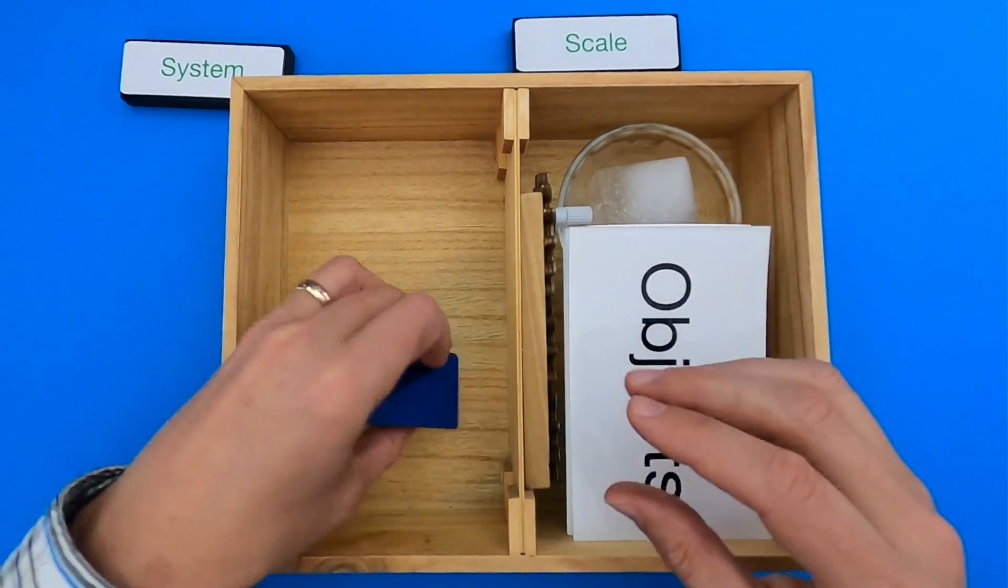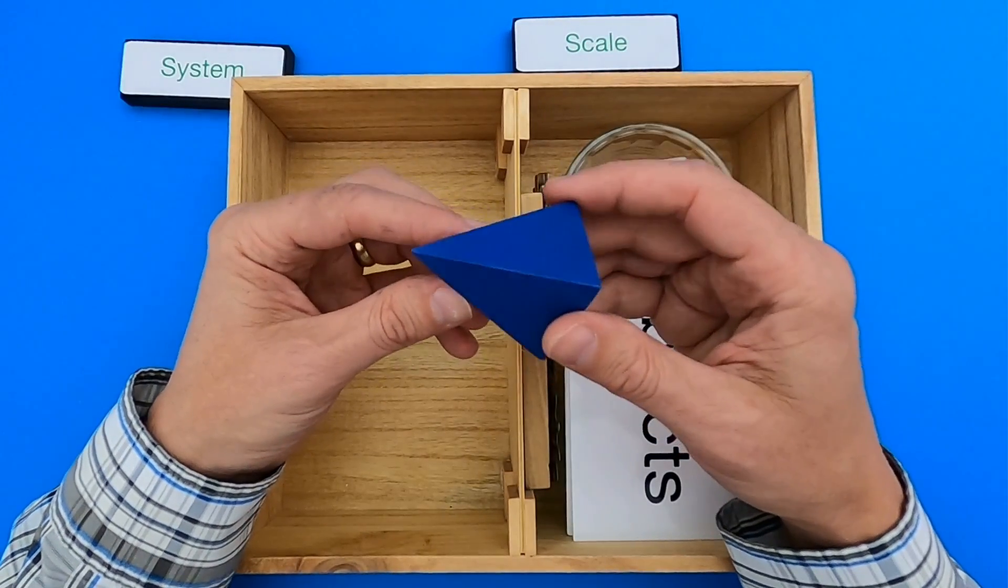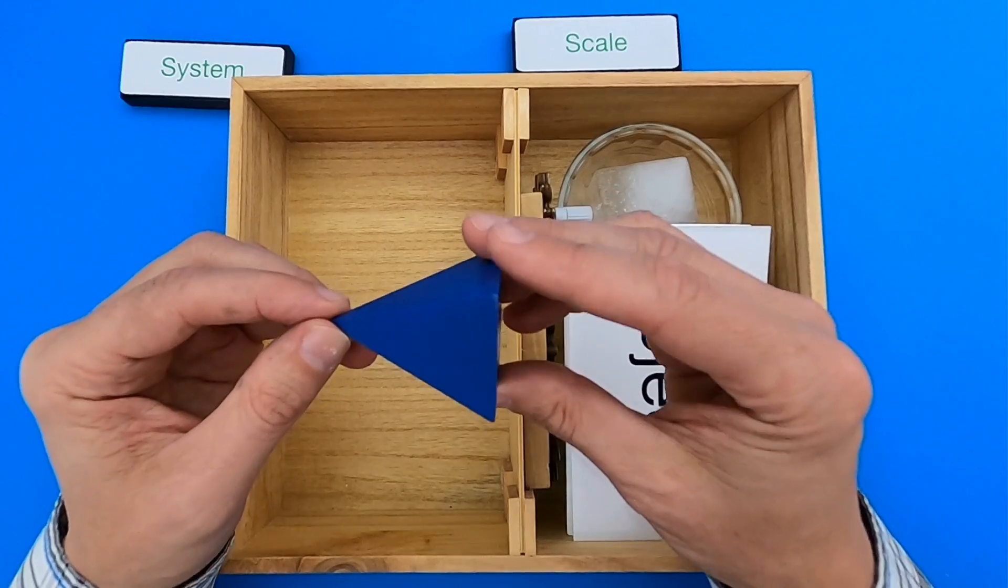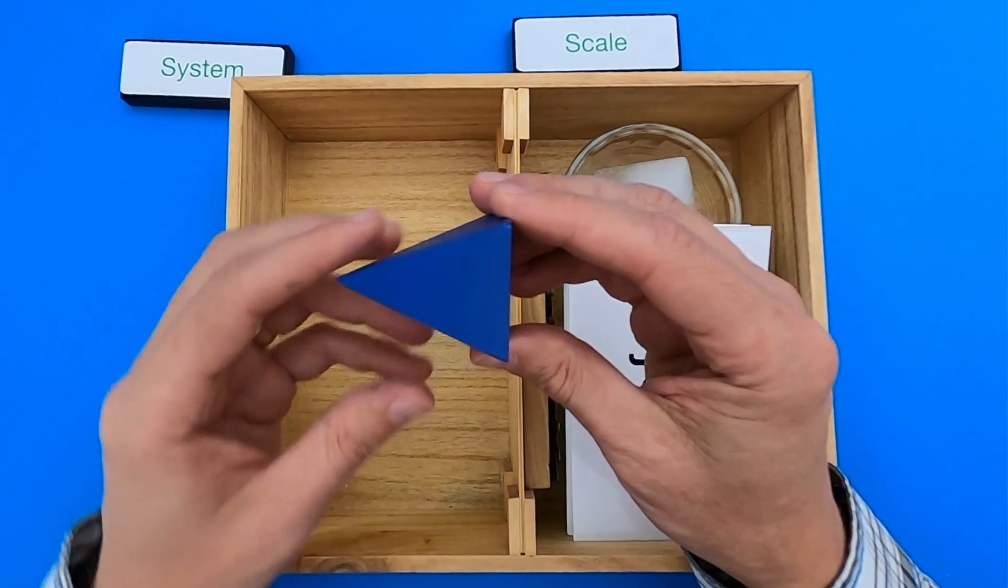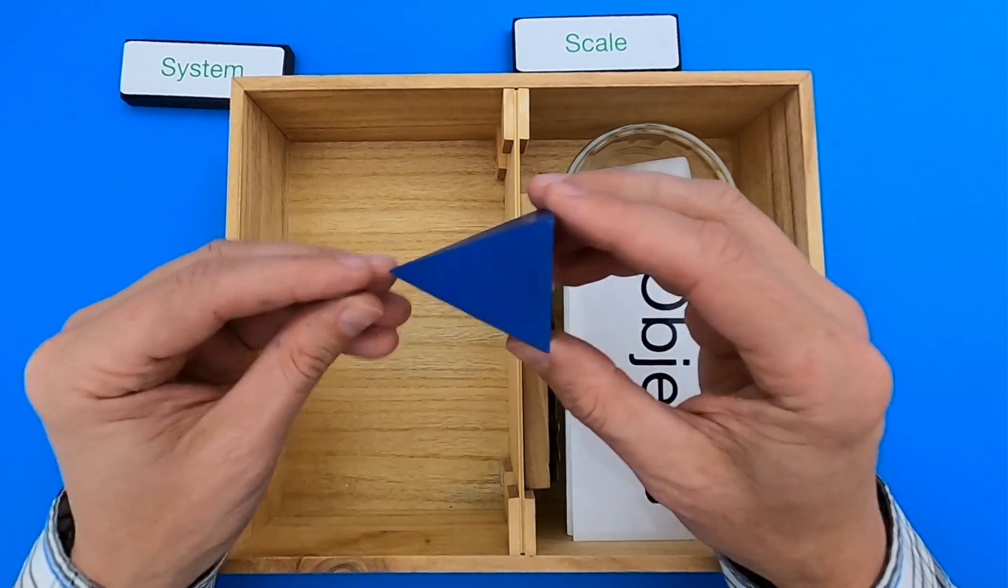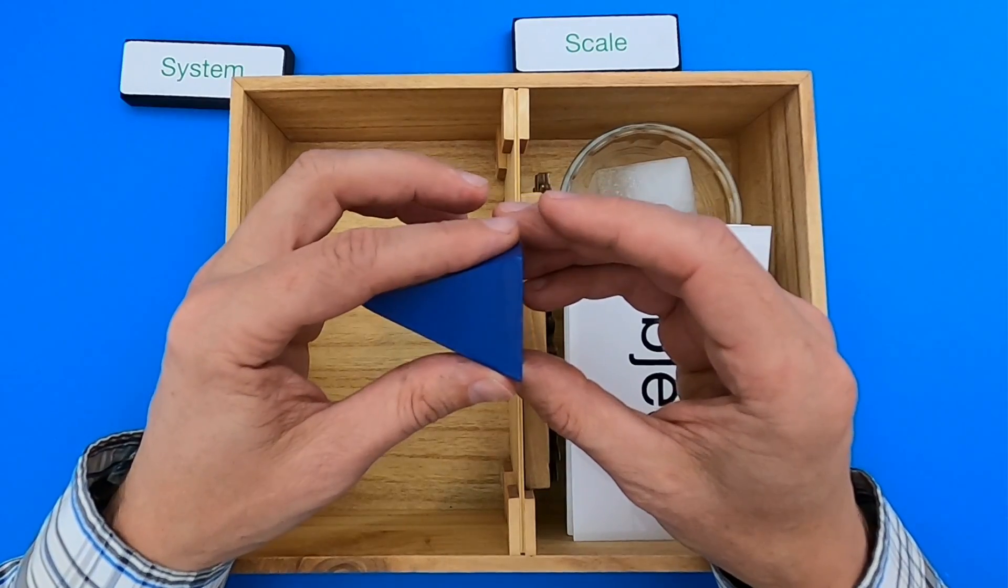So I'm going to put scale up here. The object I've created that really discusses scale is going to be this pyramid. Because if you look at the pyramid, on one side it's very small, and on the other side it's very large. So that is an increasing size scale.